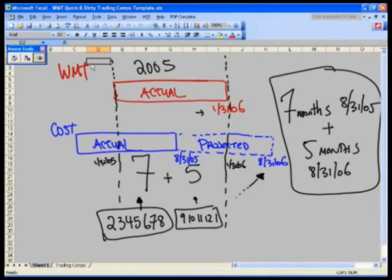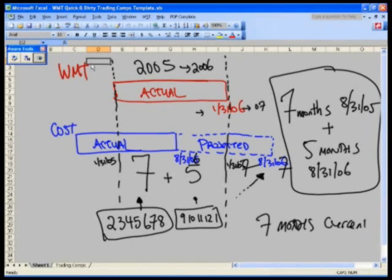Likewise, we will do the same thing for the next two projected periods. Just pretend instead of this being '05, pretend this is '06, pretend that this now is January 31st, '07, and this is '06, this is '07. You get the point. So we constantly roll the seven months of the current plus five months of the next. Okay?